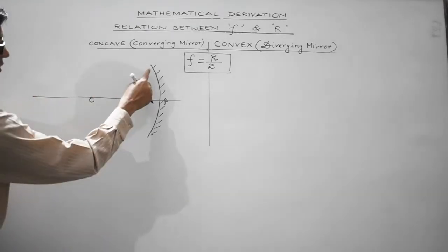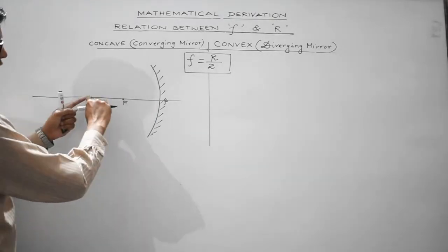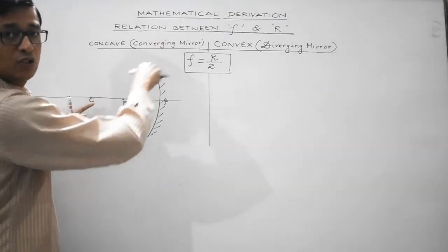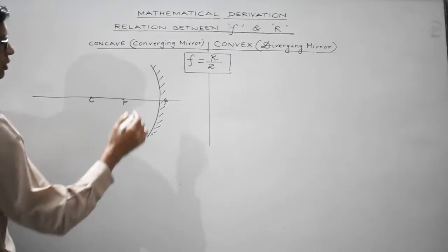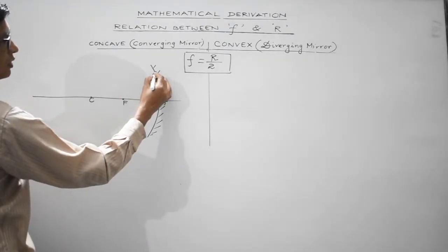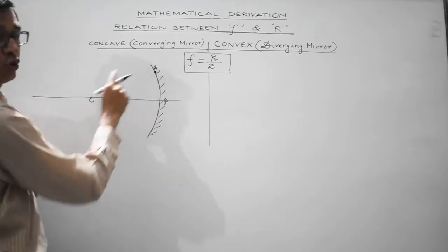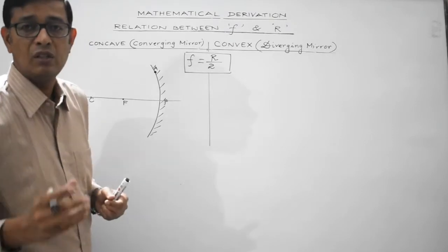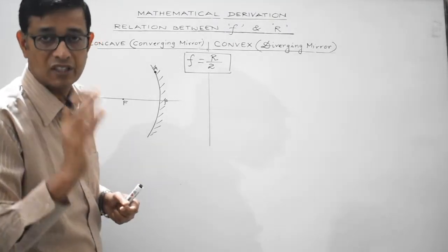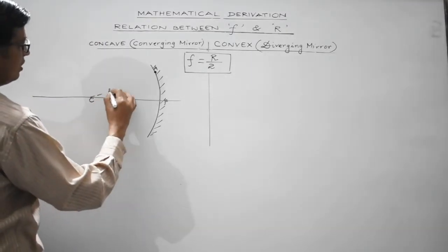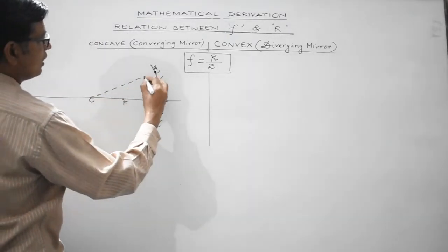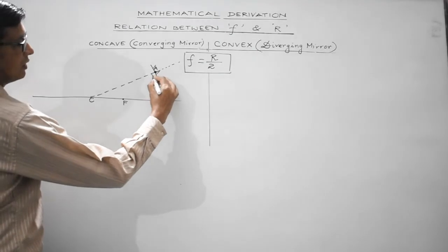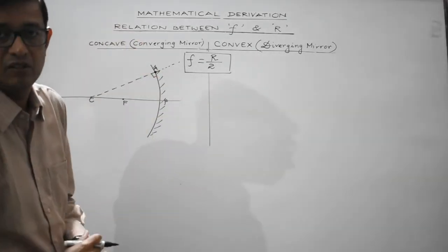This is a sphere, so any line joining from the center to a point on its surface would act as a normal — it makes 90 degrees with the surface. Suppose this is a reference point A on the mirror. To study reflection here, we need to draw a normal. Normals are represented by dotted lines. Join C to point A — this acts as the normal, perpendicular to the surface of the mirror.